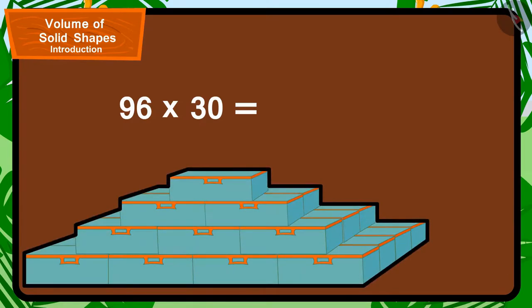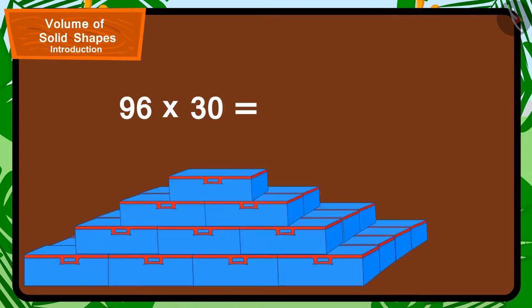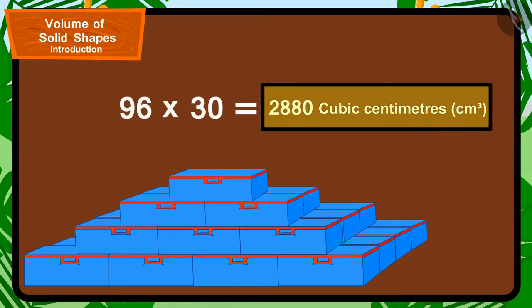In this way, the volume of all compass boxes being used in this shape made by Babban will be 96 by 30, 2880 cm³.